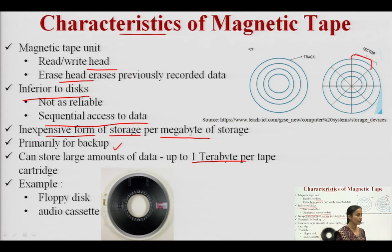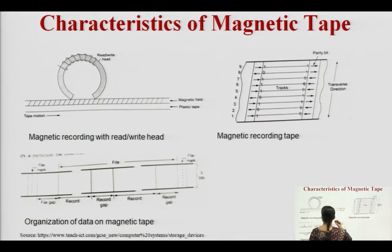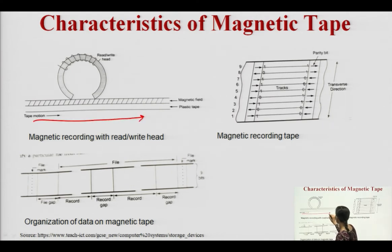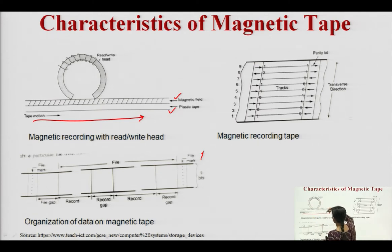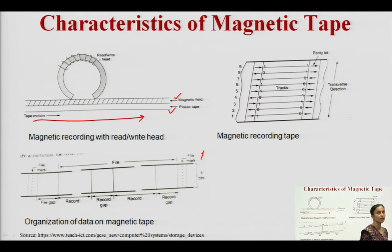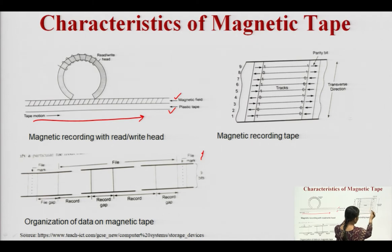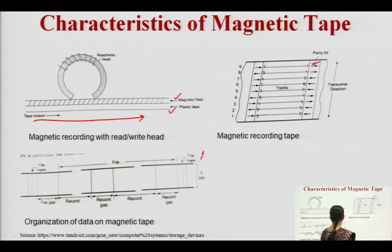Examples of magnetic tape include floppy disks and audio cassettes. In the diagram, we can see magnetic recording: the tape moves in a direction, there is a magnetic field, and the plastic tape has a coating in concentric circles. The read-write head's position tells us the direction of movement. This is how the magnetic recording tape is divided into different tracks, with data stored in the form of zeros and ones, along with a parity bit used for error correction and detection.